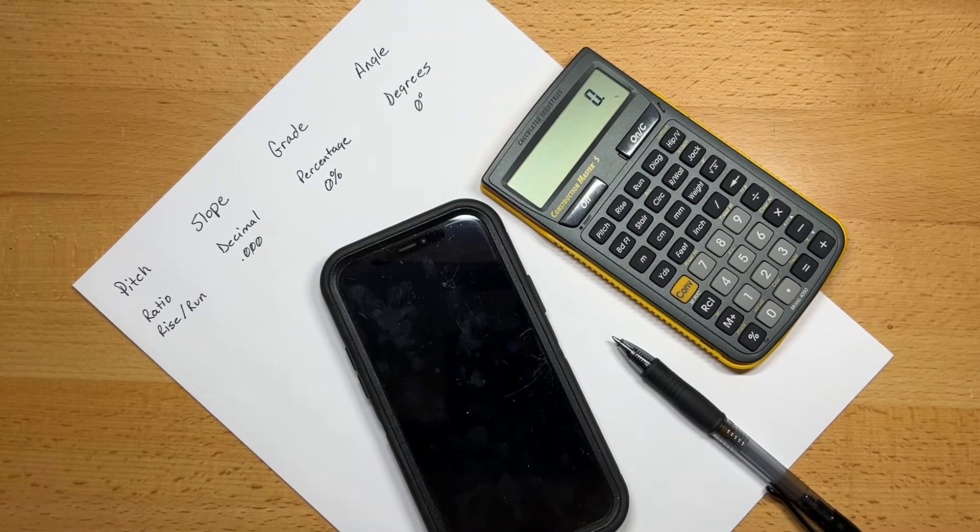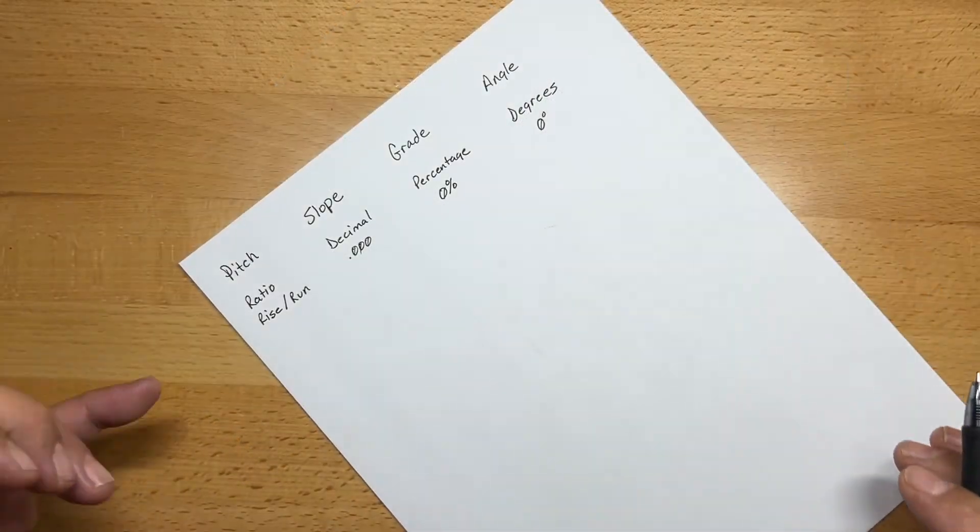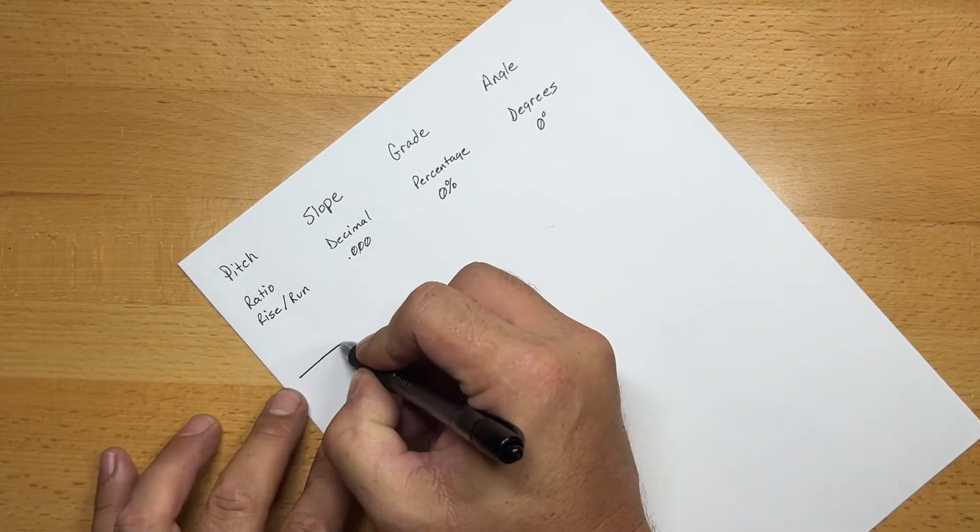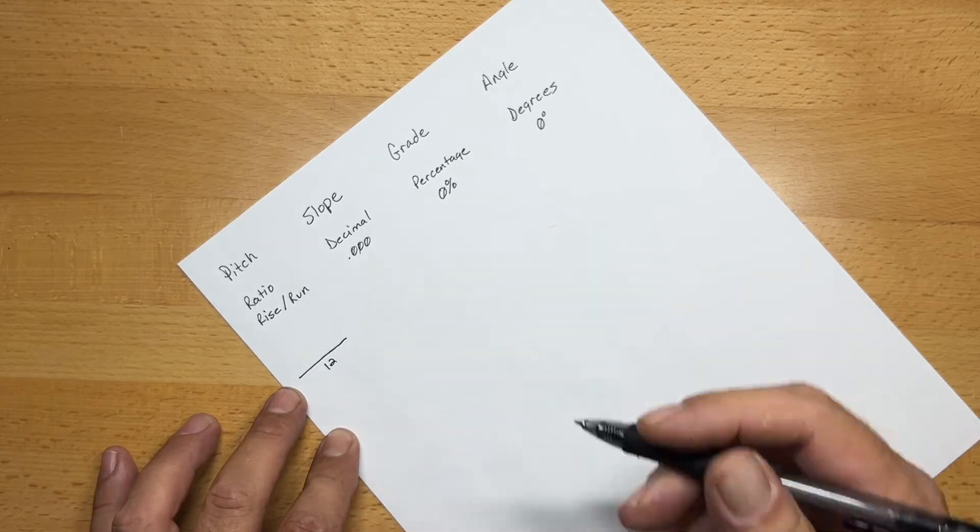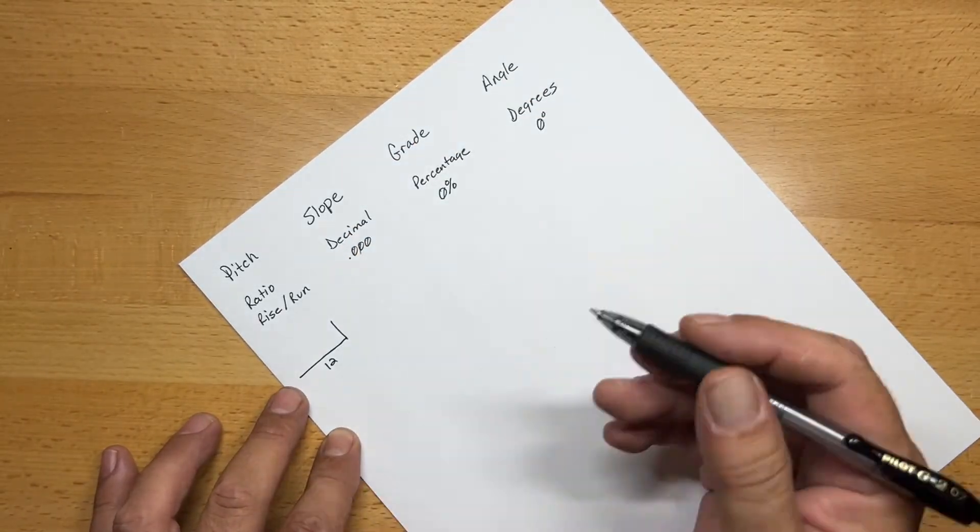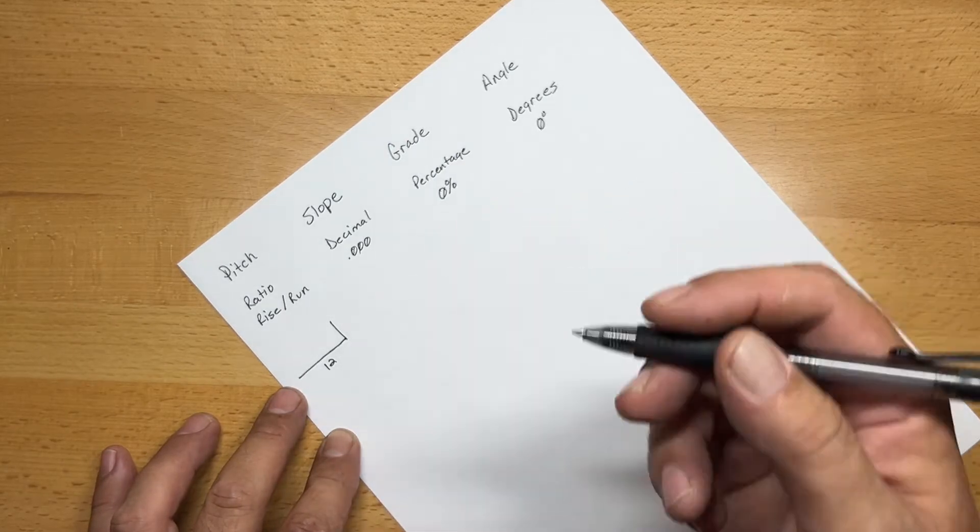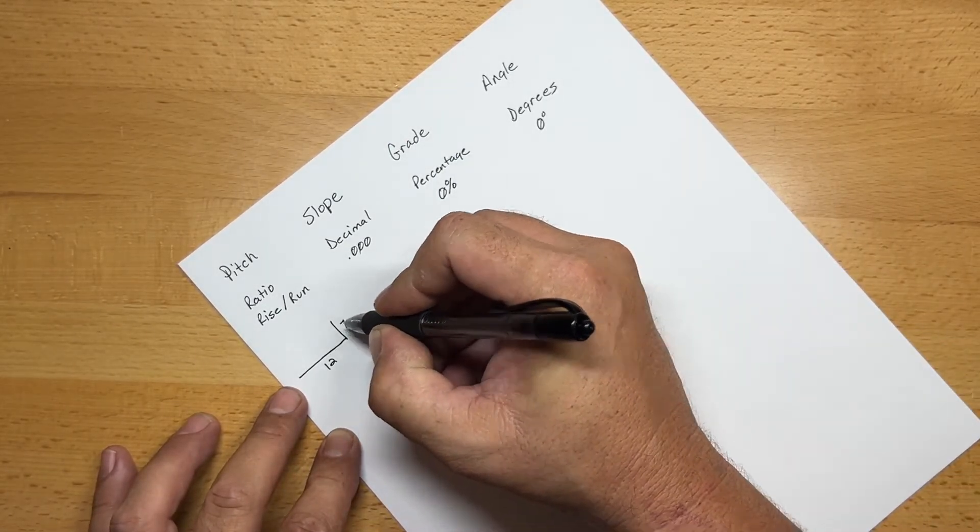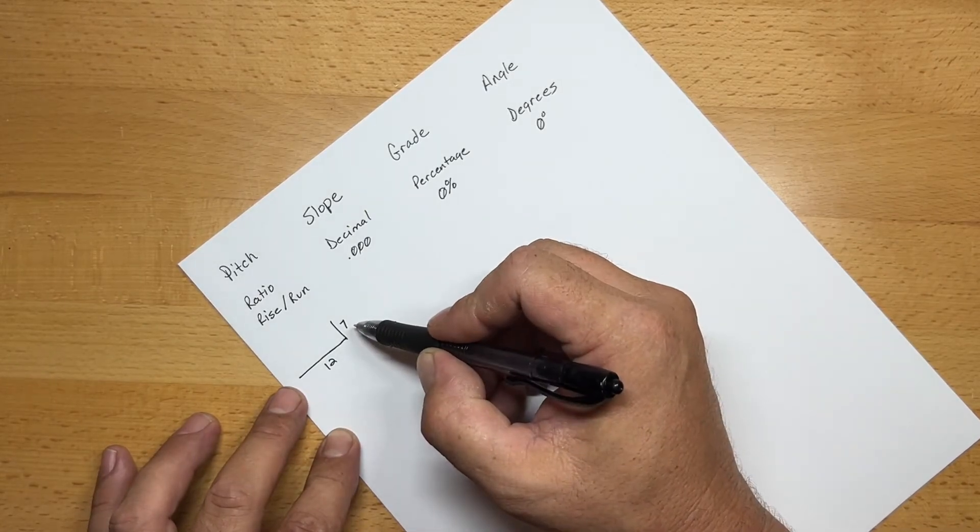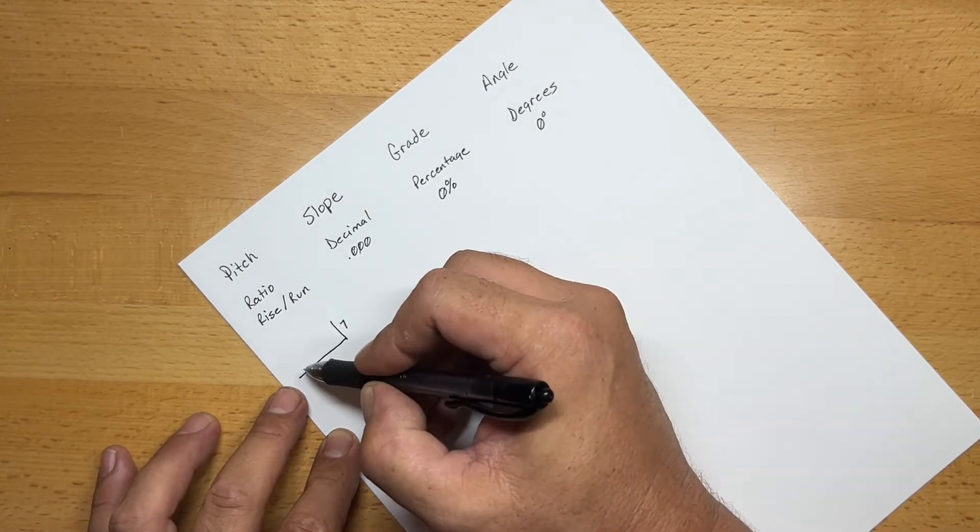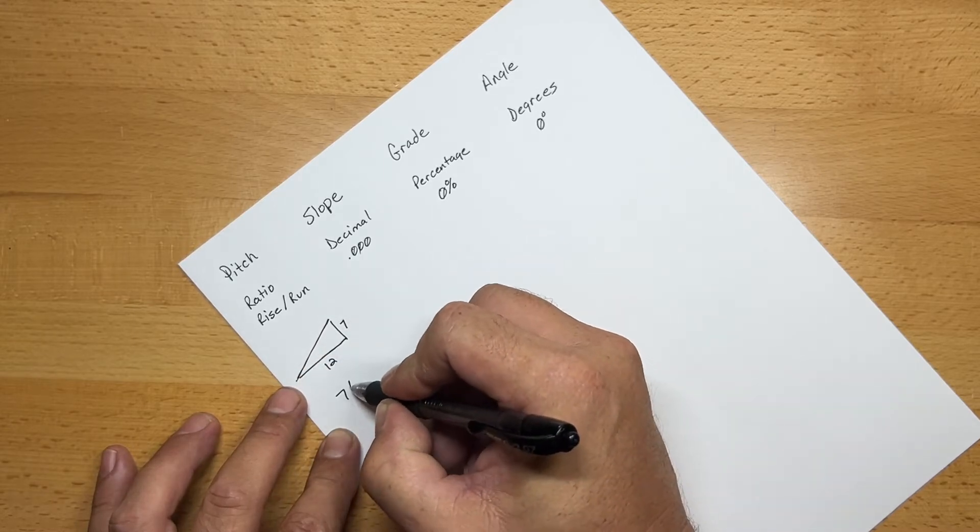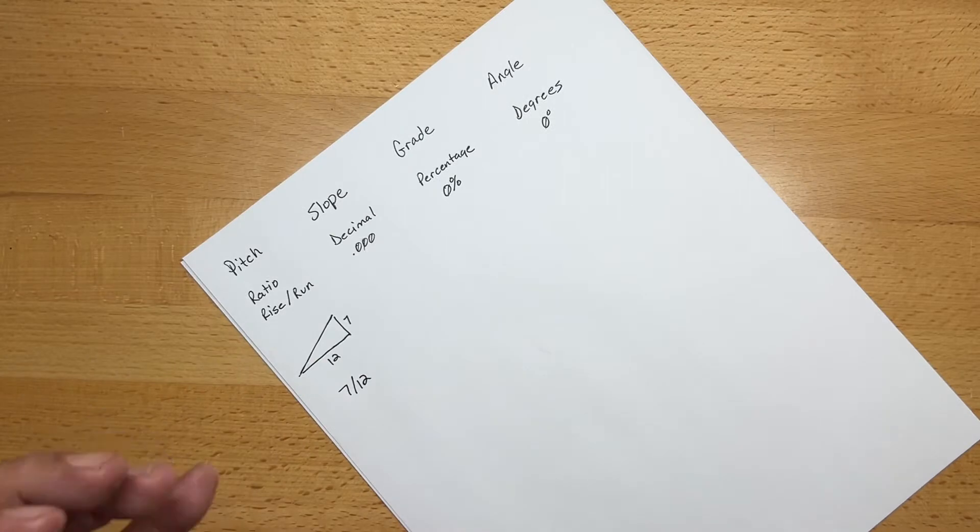So let's get started with pitch. Pitch is just a ratio of a rise over the run. So if you have a run, and normally this is here in the U.S., it's done for 12 inches. So it's 12 inches of run, and then you would input your rise. We're going to use the example of a 7-12 pitch. So our ratio would be 7 over 12.